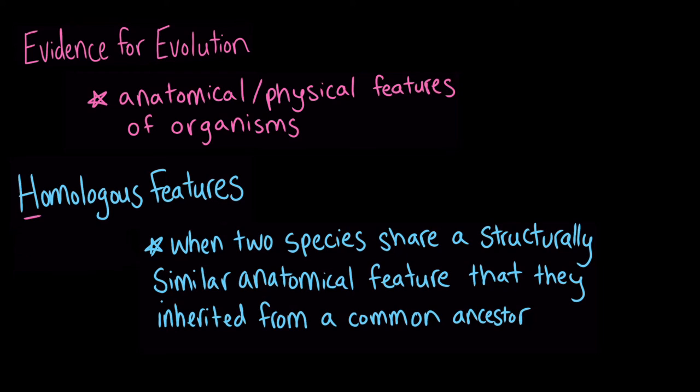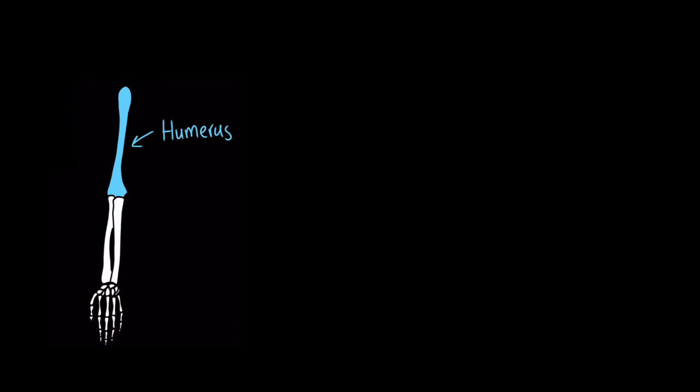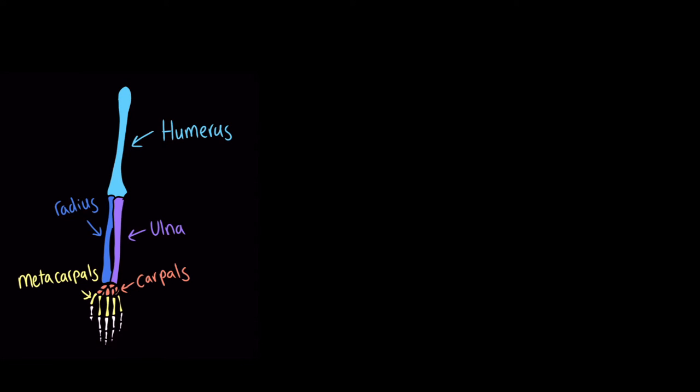The word homologous begins with a Latin prefix meaning 'the same.' And this makes sense, because when two species have homologous features, it means they share the same ancestor. Have you ever looked at an x-ray of a human's arm? If you have, you might have noticed that we have humerus, ulna, radius, carpals, and metacarpal bones.